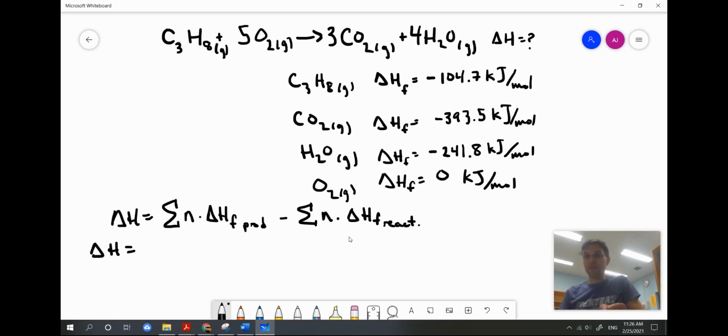I start off with my heats of formation of my products, which are carbon dioxide and water vapor. I have three moles of carbon dioxide as a product, and I multiply it by the heat of formation for carbon dioxide.